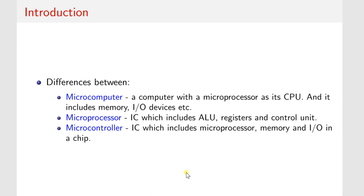Before studying microprocessors, we should know about the microcomputer, microprocessor, and microcontroller, and what are the differences between them. A microcomputer is a computer with a microprocessor as its CPU and also includes memory, I/O devices, etc. A microprocessor is a single IC which includes the ALU, registers, and control unit. A microcontroller is also a single IC which includes a microprocessor and requires some memory and I/O inside the same chip.